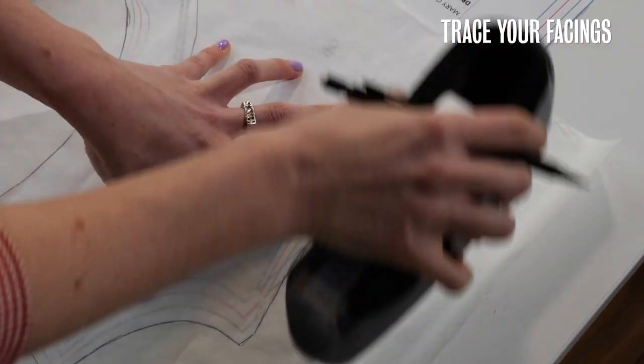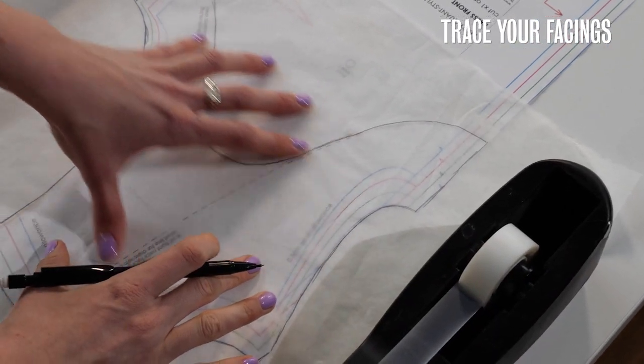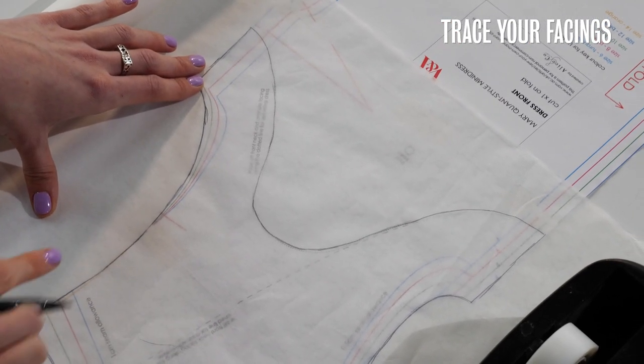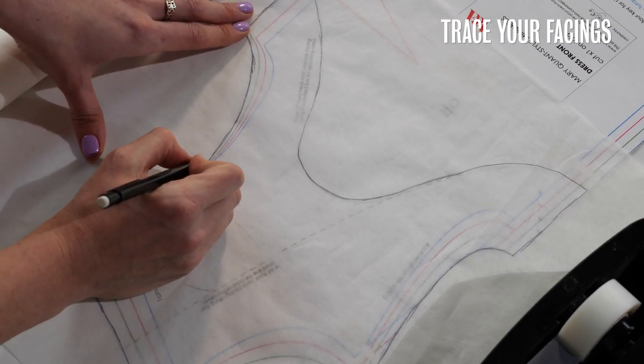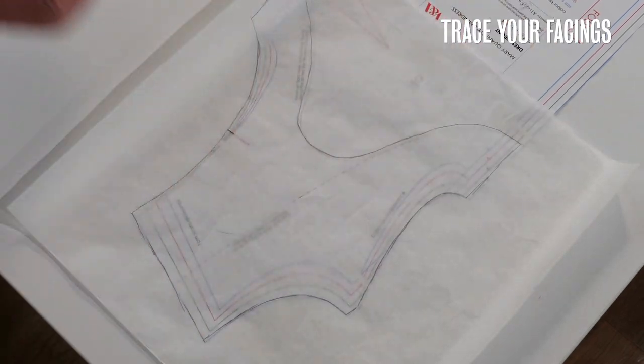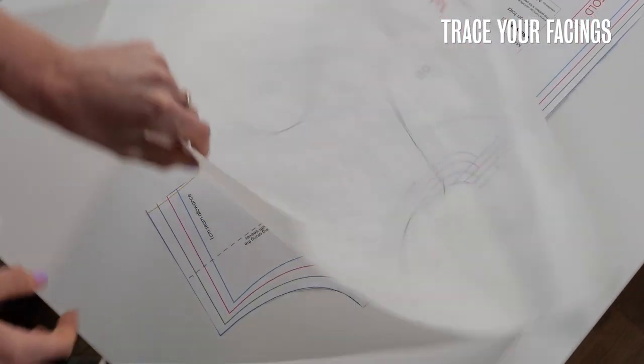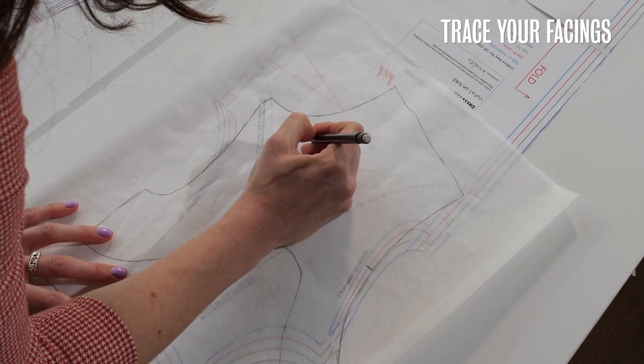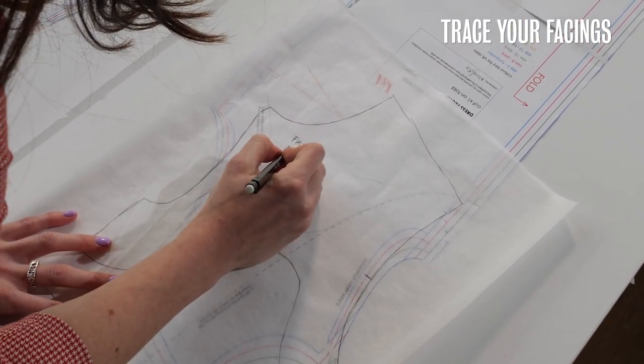Okay and then before I cut it out I want to make sure that I add any marks that are on the pattern also onto my facing so in this case it's just to mark the armhole notch here. It's also a good idea to always label your pattern piece so this is my front facing.